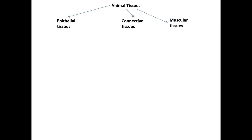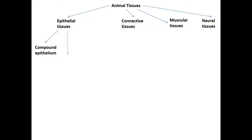Animal tissues are basically divided into four types: Epithelial tissues, Connective tissues, Muscular tissues, and Neural tissues. In case of multi-layered epithelium, it is called Compound epithelium. A single layer is called Simple epithelium.